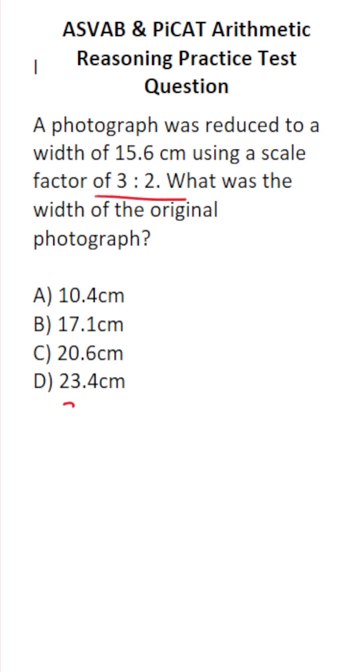We're going to put this scale factor of three to two on the left hand side of our proportion. And how are we going to fill in the right hand side? This 15.6 centimeters corresponds to the smaller value, so I'm going to put that down here with this smaller value of two. And we don't know its original width, so we'll call that x.